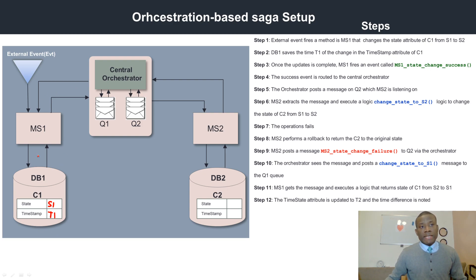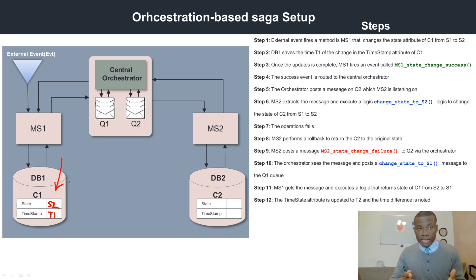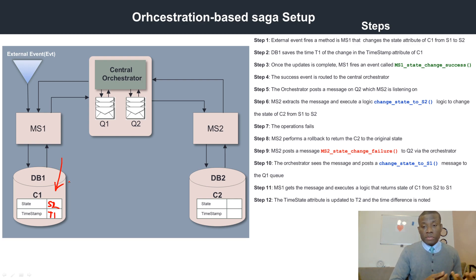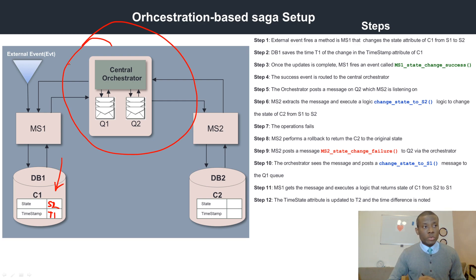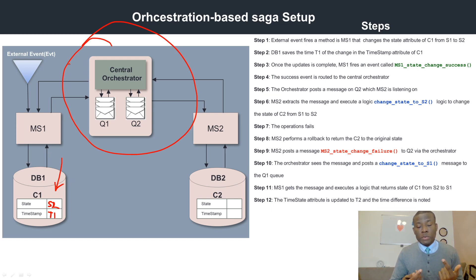When MS1 triggers an event, the state of the collection changes from S1 to S2. After it changes to S2 successfully, it triggers an MS1 state-change-success event, meaning the operation was successfully executed and the state changed from S1 to S2 — we still have timestamp T1. This success event is routed to the central orchestrator, which then posts a message to Q2, a queue that is listened to by MS2.